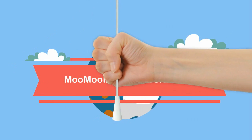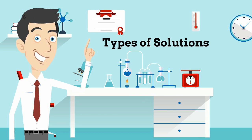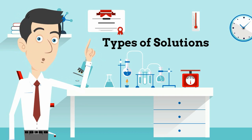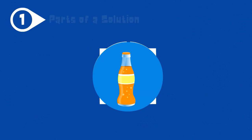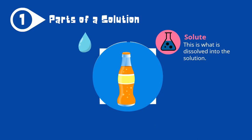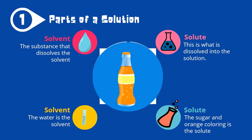Welcome to Moomoo Math and Science. In this video I'd like to talk about types of solutions. Before we begin, let's look at a solution and a couple of key definitions. A solution is when a solute is dissolved into a solvent. For example, in an orange drink, the solvent is the water and the solute is the orange powder or sugar.